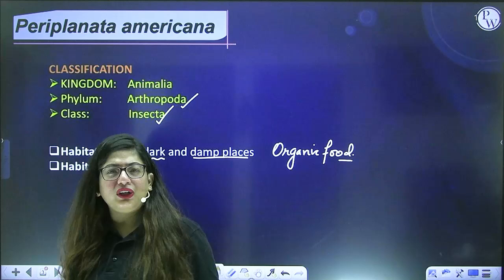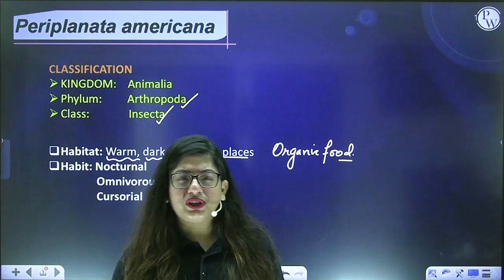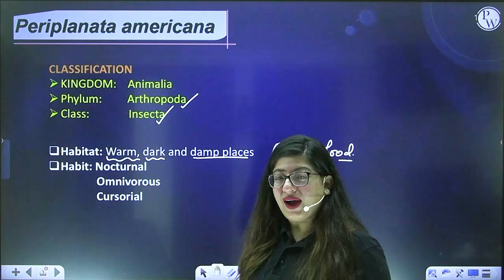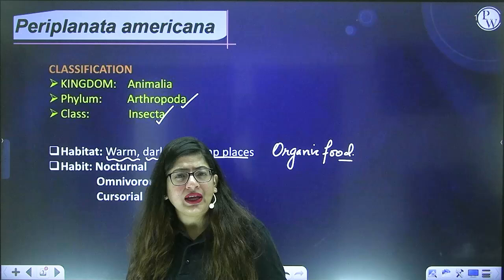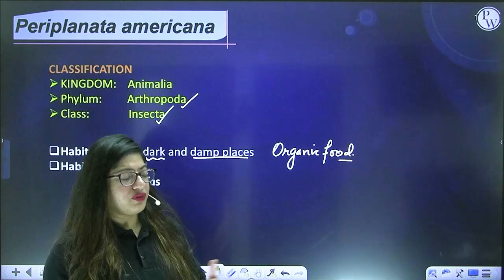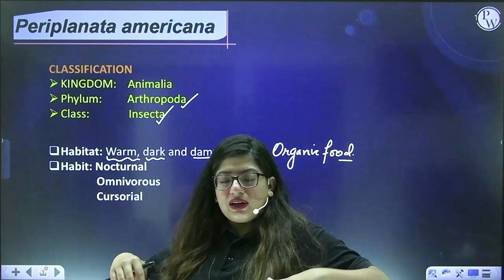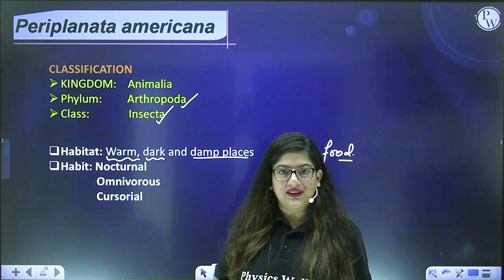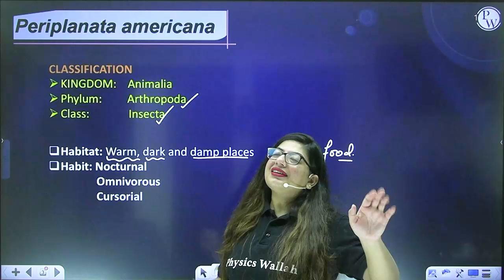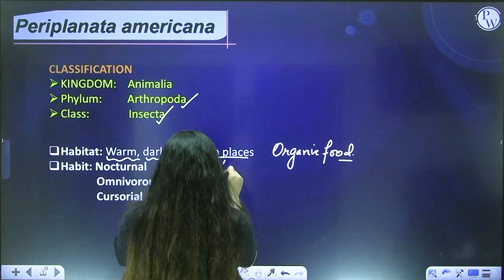When you go to the kitchen during the day, you barely see cockroaches. But during the night, if you go to the kitchen, you generally find a lot of cockroaches. This is because they are nocturnal — organisms which are active during the night. We are diurnal; we are active during the day and sleep at night. Cockroaches are the opposite — active at night and sleeping during the day.